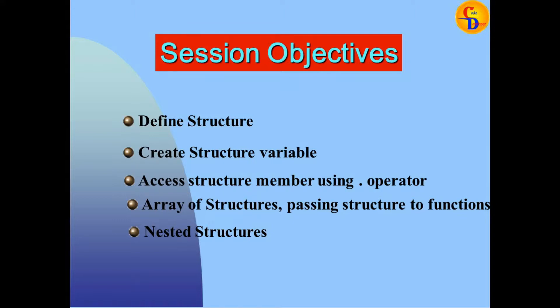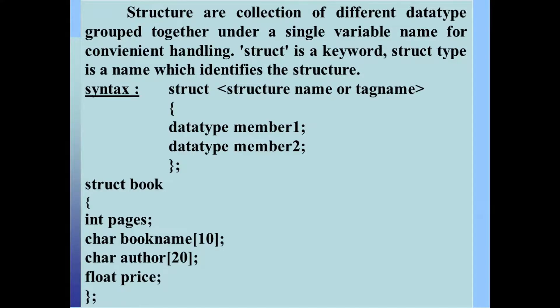What is a structure? A structure is a collection of different data types grouped together under a single variable name for convenient handling. It is also called a collection of heterogeneous data items. 'struct' is the keyword for structure, and the structure type name identifies the structure.